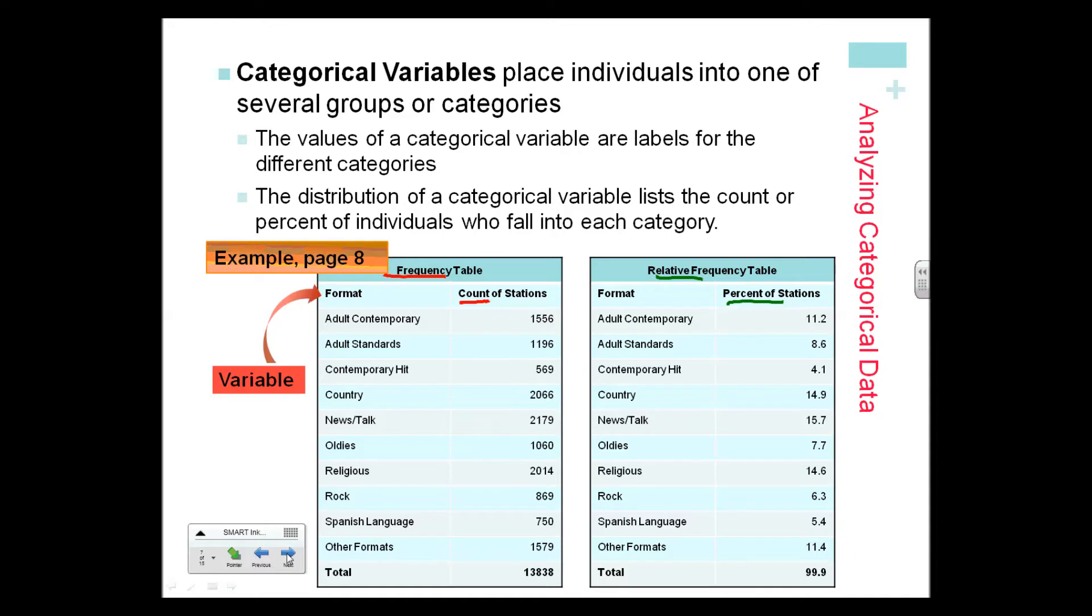Remember, the variable is not adult contemporary, adult standards, and so forth—those are values. The variable is the type of music. The values of that are these things listed here: country, news talk, oldies, religious, etc. Very important distinction.